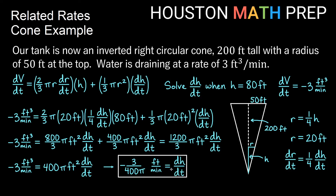This makes sense: the units are feet per minute since height is in feet and it's changing over time. It's a negative rate because the height is decreasing as water drains. Hopefully this helps with your related rates problems and thinking through those. Thanks for watching — we'll see you in the next video.